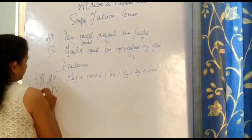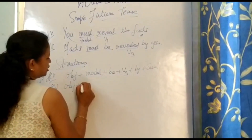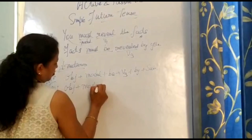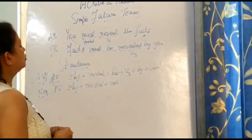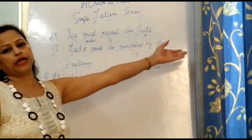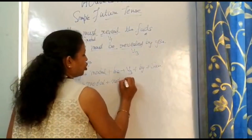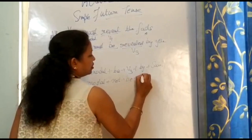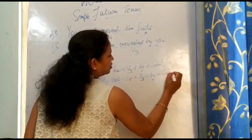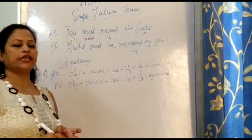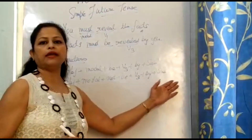For a negative sentence in passive voice, we have: object + modal + not + be + V3 + by + subject. So 'The facts must not be revealed by you' becomes the negative sentence.